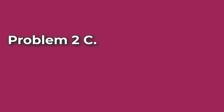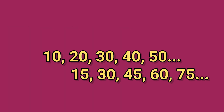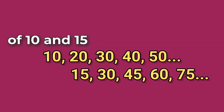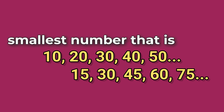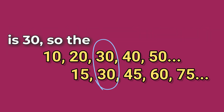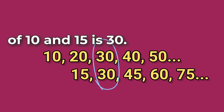Problem Number 2C. What is the least common multiple of 10 and 15? Look at the multiples of 10 and 15 and find the smallest number that is in each list. The smallest number in each list is 30, so the least common multiple of 10 and 15 is 30.